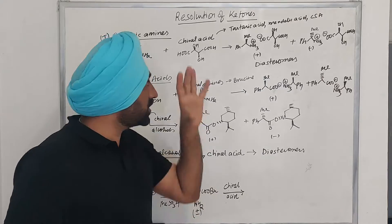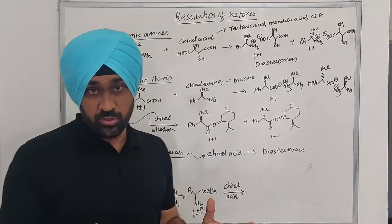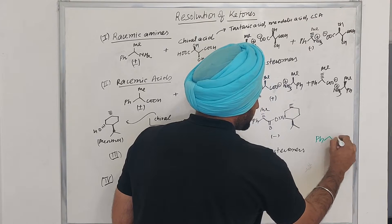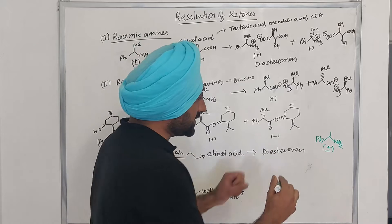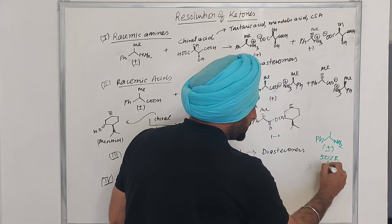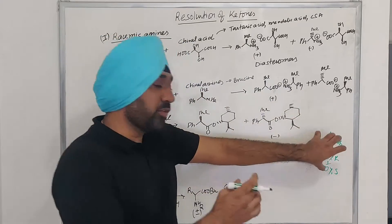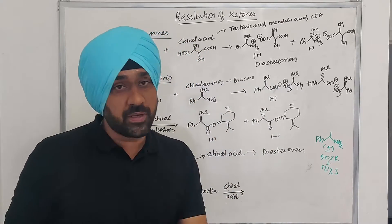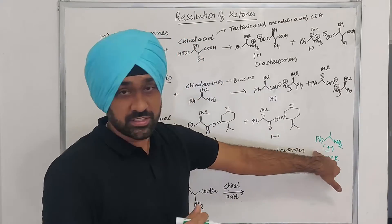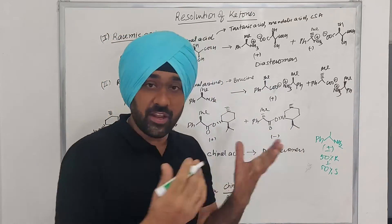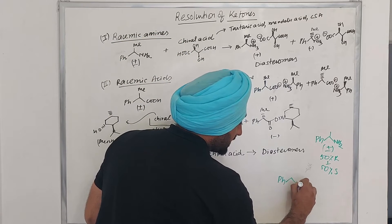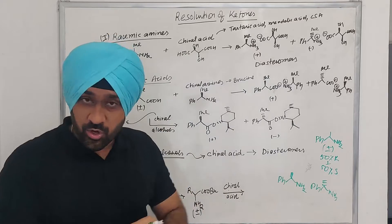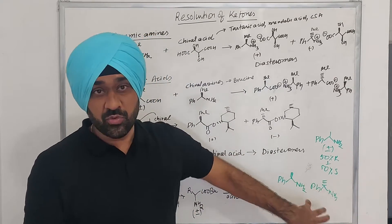What is resolution? Whenever we talk about resolution, we know that it is a racemic compound. Let us suppose if I have this compound — this amine — so we write it as a racemic compound. This means that it contains 50% R plus 50% S. Resolution means: can we isolate the 50% R from the 50% S? Can we obtain an optically active form? We know this is a racemic compound and this is nothing but a pair of enantiomers existing 50-50%. Both of them cannot be separated by any physical means because they have identical chemical and physical properties.